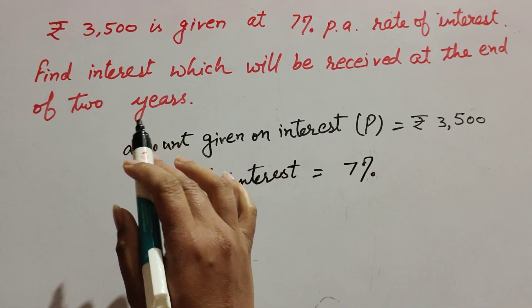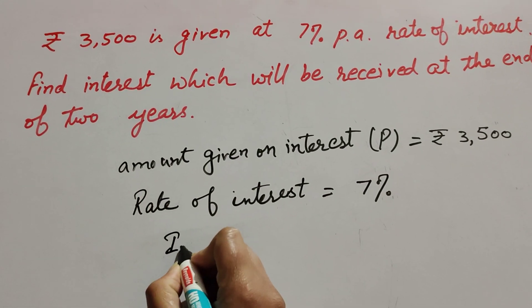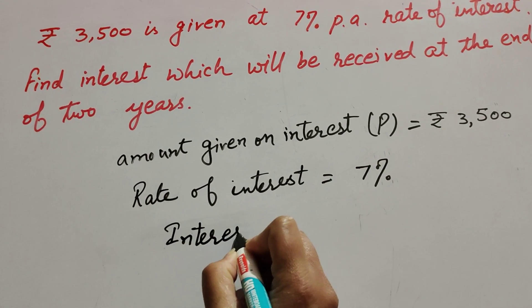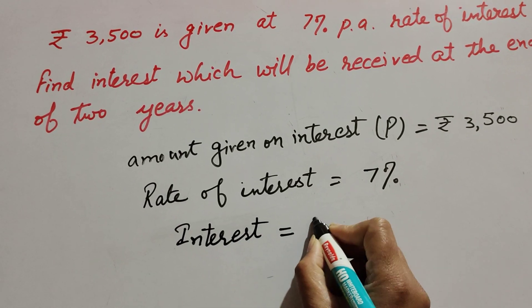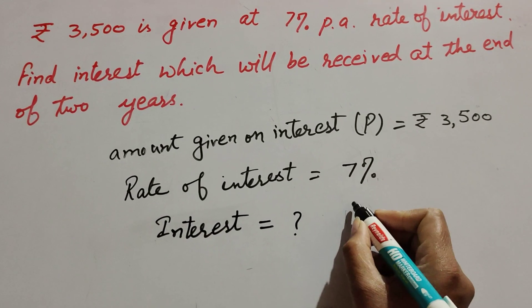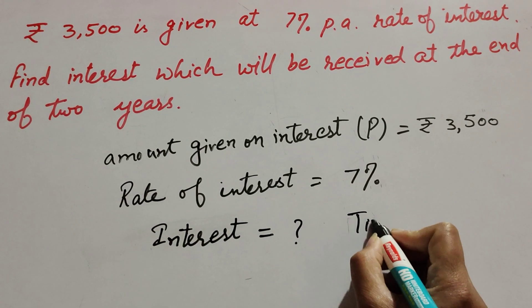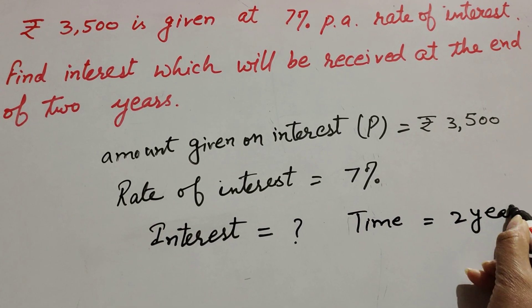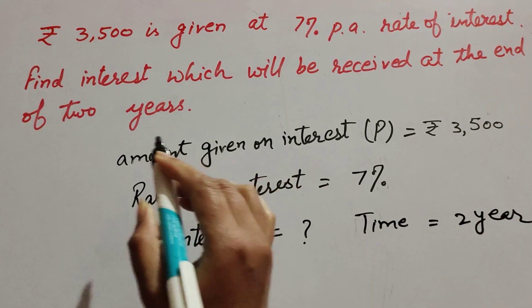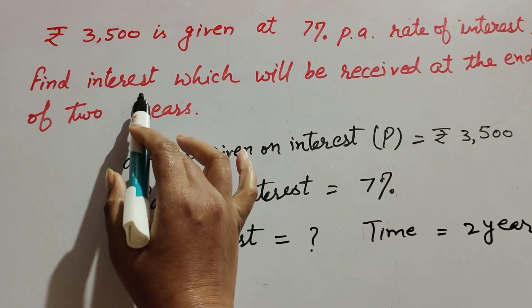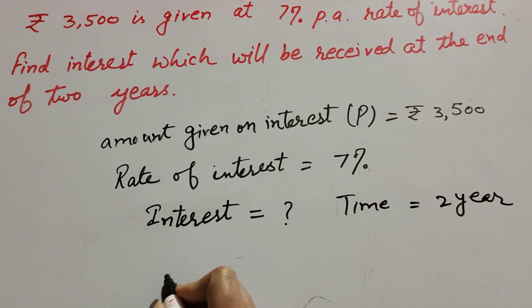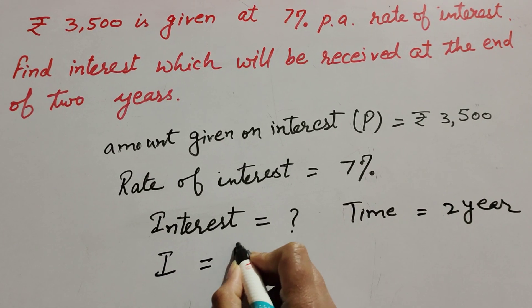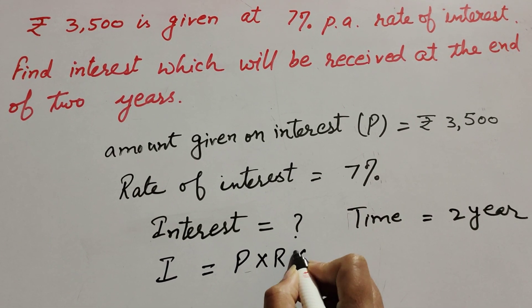We have to find the interest which will be received at the end of two years. The time is given as two years. We know the formula to find interest: I is equal to P multiplied by R multiplied by T, over 100.